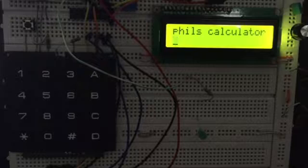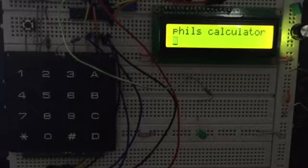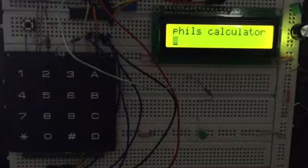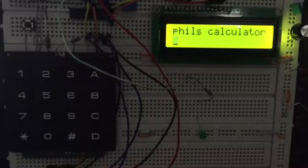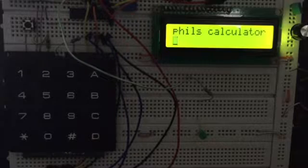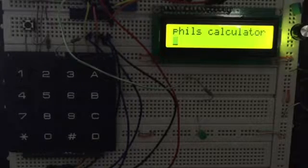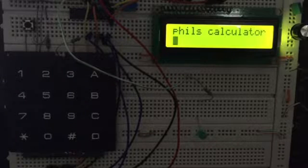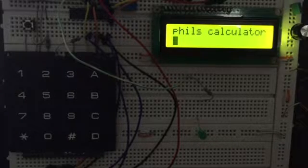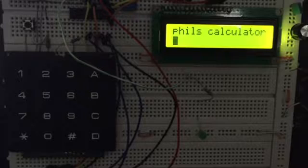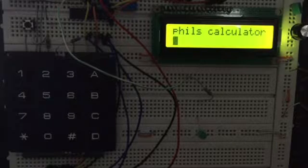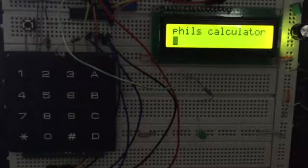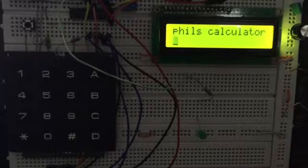The keypad is scanned by sequentially setting a row high and then testing to see if the columns - there's four rows and four columns - testing to see if the column has also gone high. We use port C for this. Four bits of it are outputs connected to the rows and then four bits are inputs connected to the columns.